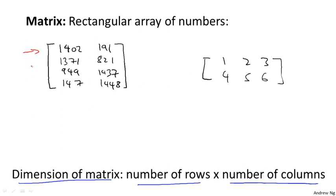So concretely, this example on the left has one, two, three, four rows, and it has two columns.